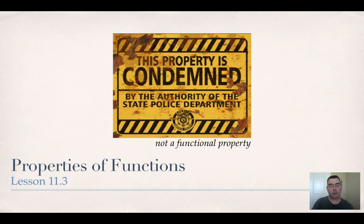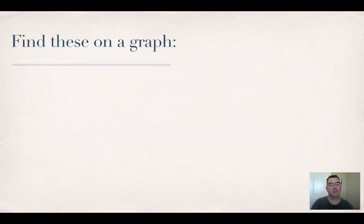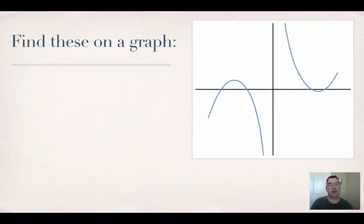This is lesson 11.3, so let's get started. We're going to find a certain set of things on a graph, and that's going to help us understand the graph a little better. Let me talk about what those six things are.